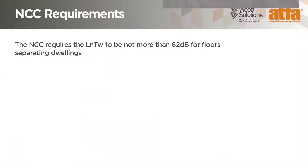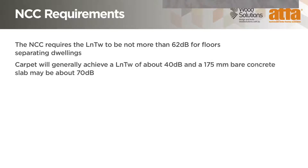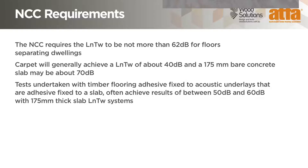The National Construction Code, or NCC, requires that the LnTW should be no more than 62 dB for floors separating dwellings. A standard carpet will generally achieve an LnTW of about 40 dB, whereas a 175mm thick bare concrete slab may provide an LnTW of around 70 dB. Tests with timber flooring that has been adhesive fixed to acoustic underlays and then to a 175mm concrete slab often achieve results of between 50 dB and 60 dB.